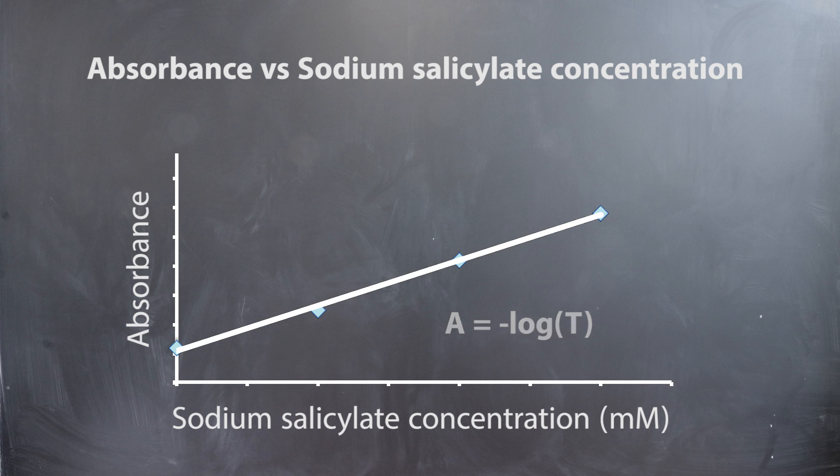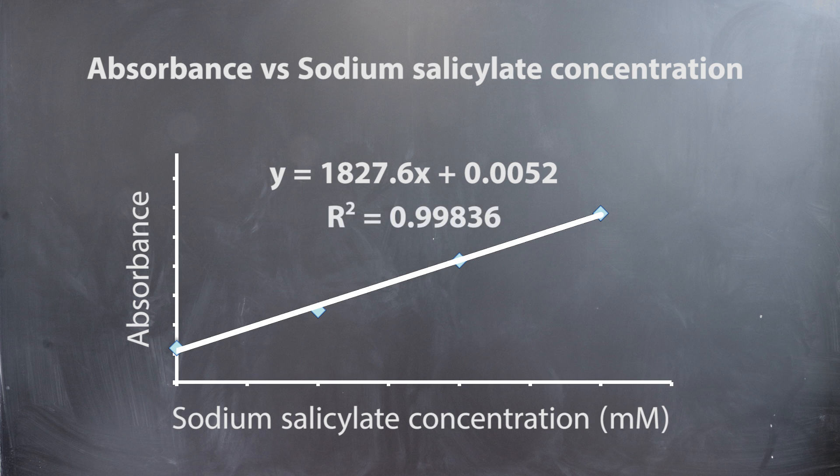After plotting these values, you must construct a line of best fit, which will be your standard curve. Ensure that the R-squared value is higher than 0.98 in order to be considered accurate. Note that this is a sample graph. Your graph may be different from the one shown here.